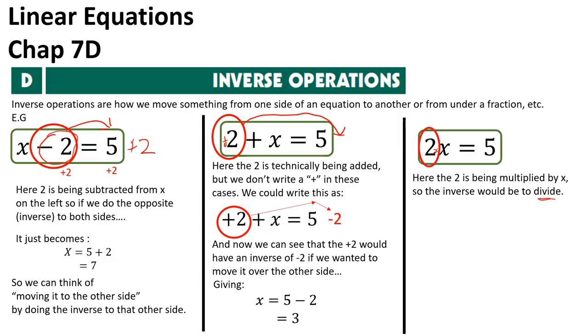So 2 needs to move. If I want to move the 2 across, I need to divide by 2, because it's the opposite of what's being done. That's going to leave me with x equals 5 divided by 2, or 5 on 2. 5 divided by 2, same thing. And that's my answer.